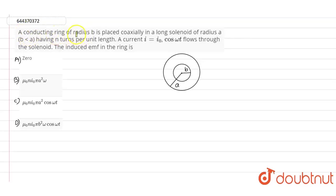It is given that a conducting ring of radius b is placed coaxially in a long solenoid of radius a, where radius b is less than radius a, having n turns per unit length.